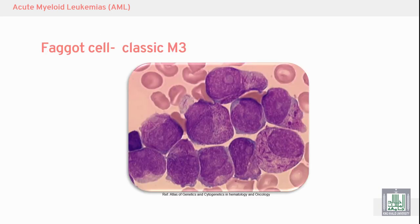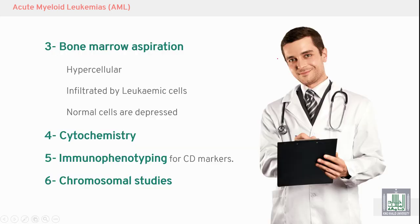Faggot cells are characteristic of classic M3. Bone marrow aspiration is essential to confirm the diagnosis, showing a hypercellular marrow infiltrated by malignant cells: myeloblasts, promyeloblasts, or monoblasts, megakaryoblasts, or erythroblasts, while normal cells are depressed due to bone marrow failure.